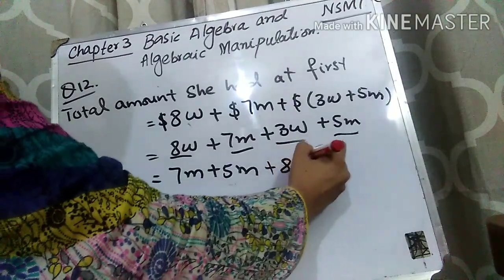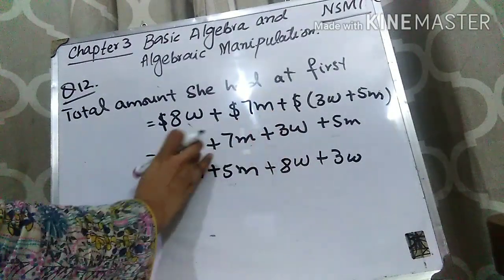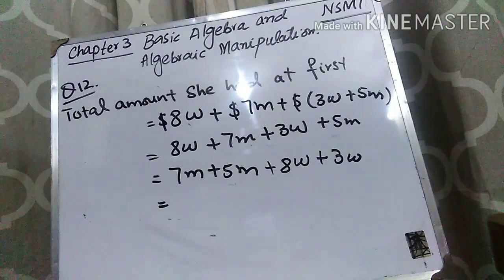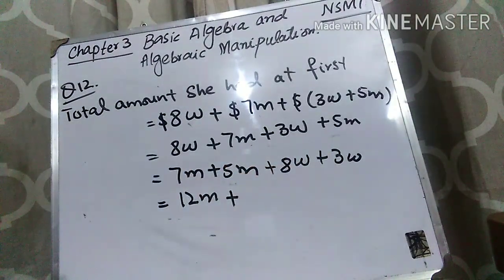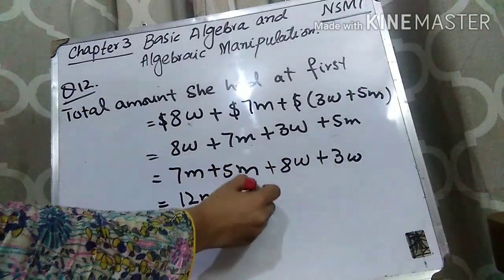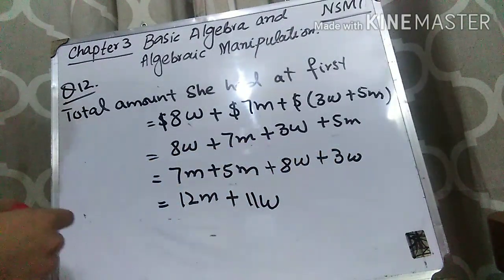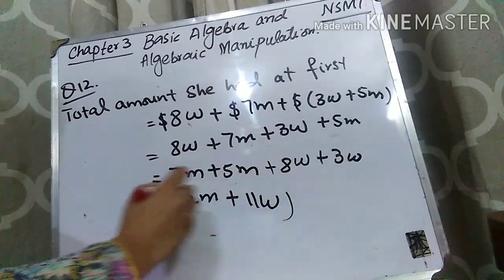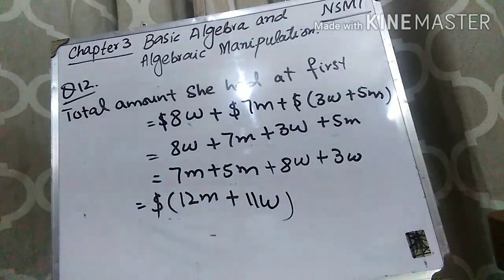So 8W plus 3W, and 7M plus 5M. Adding: 7M plus 5M equals 12M, and 8W plus 3W equals 11W. Since the amount was in dollars, the total amount she had at first was $12M plus $11W.